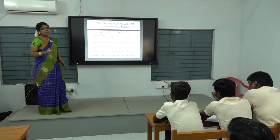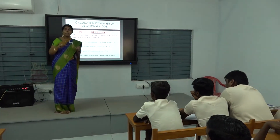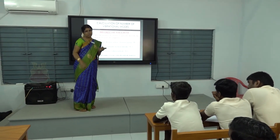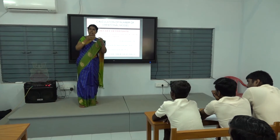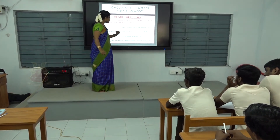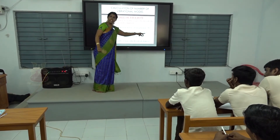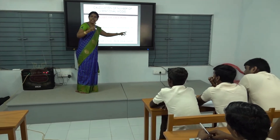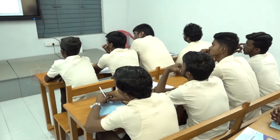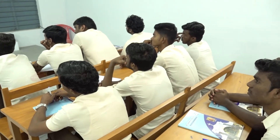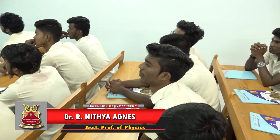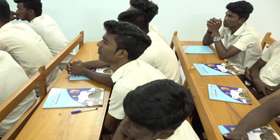For a diatomic molecule, the number of atoms is 2, arranged linearly, so the possible vibrational motions are 3n minus 5. Substituting n equal to 2: 3×2 = 6, and 6 minus 5 equals 1. So in a diatomic molecule, the only possible vibrational motion is symmetric stretching.